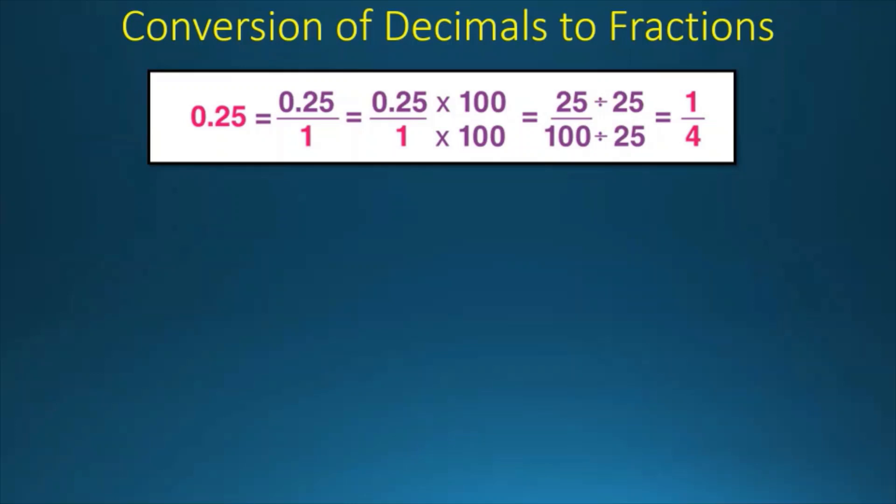We need to multiply it by 100 or whatever number the decimal is. For example, if it is 0.001, then we need to multiply by 1000 so that it becomes a whole number. After multiplying 0.25 by 100, we get 25, and when we multiply the denominator by 100, we get 100. So 25 by 100 we will divide by 25, and then we get 1 by 4. So this is the easiest way to convert a decimal into a fraction.